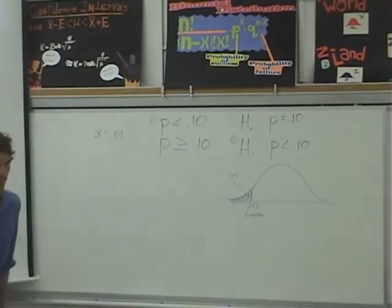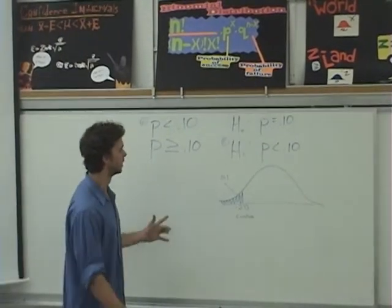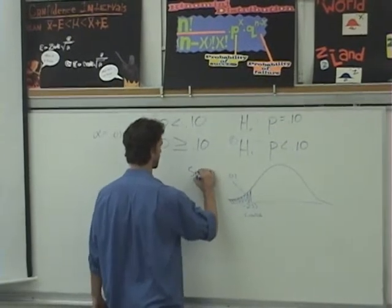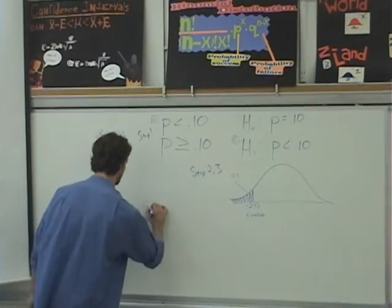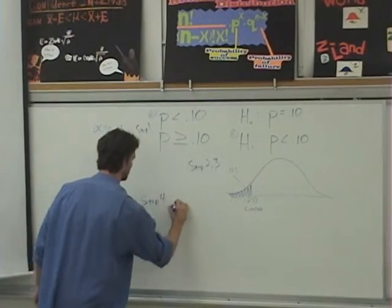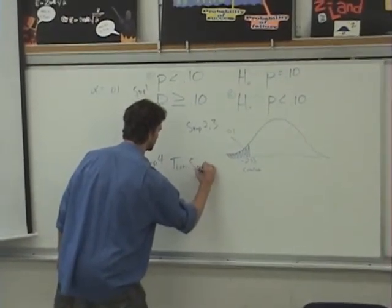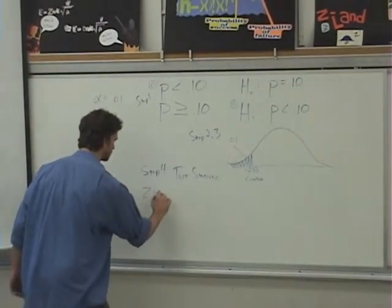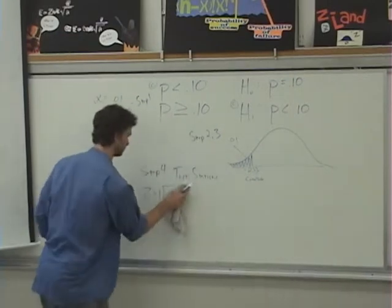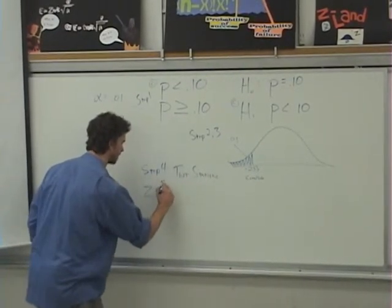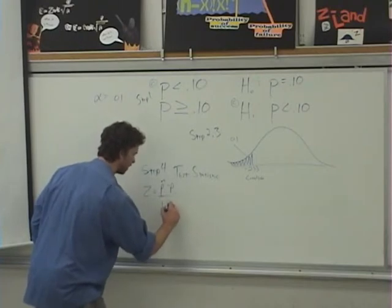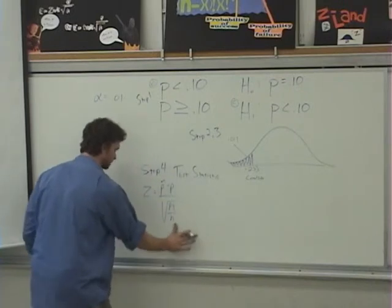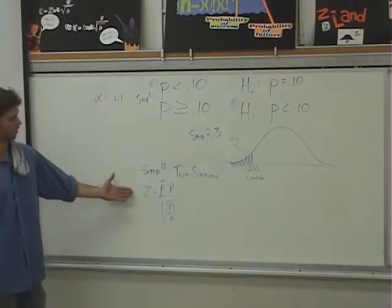So great, now our next step. Now we know where our critical region is, we are going to do the test statistic. This one was step one, this is step two and three. Step four is the test statistic. Beautiful. This one is for a proportion. Z equals P hat minus P divided by the square root of PQ divided by N. That is fabulous. Very good.